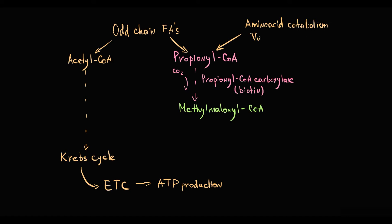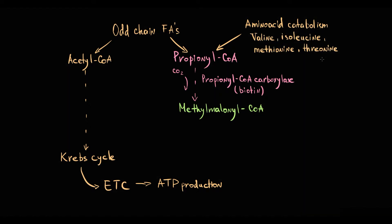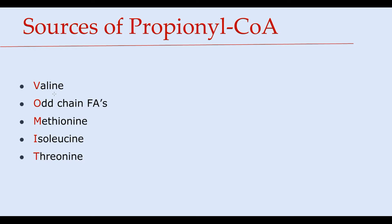Those four amino acids are valine, isoleucine, methionine, and threonine. The easy way to remember this is the abbreviation VOMIT, where V stands for valine, O for odd-chain fatty acids, M for methionine, I for isoleucine, and T for threonine.